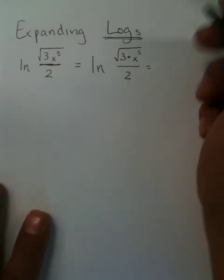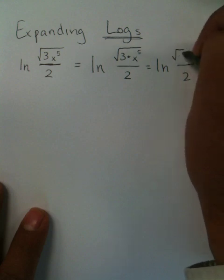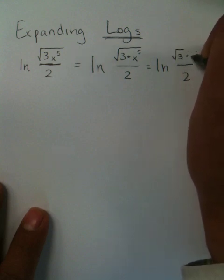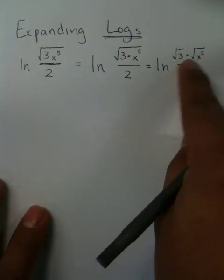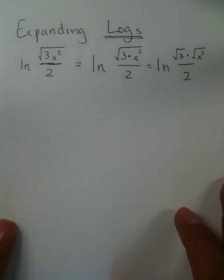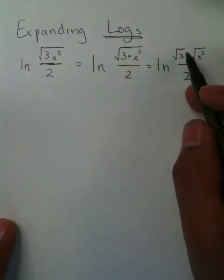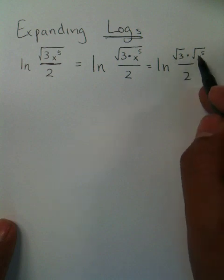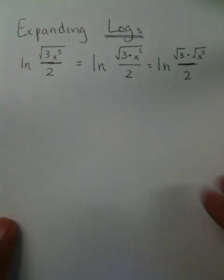What also makes looking at this problem a little easier is that you can actually separate the 3 and the x to the fifth. You can separate those, and what you really get to see is you're trying to make this its own log, this its own log, and the division makes its own log.